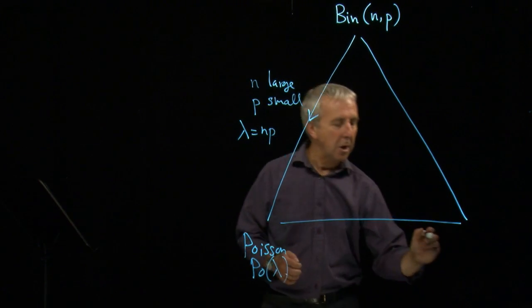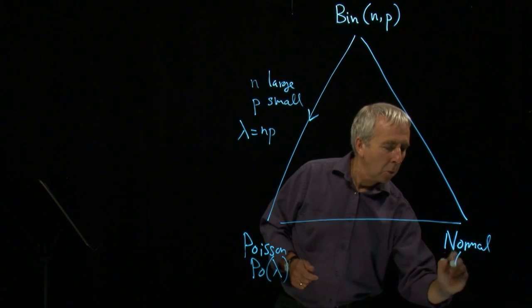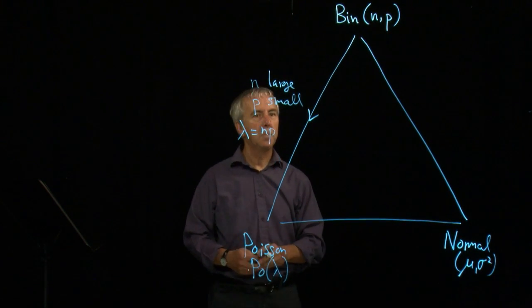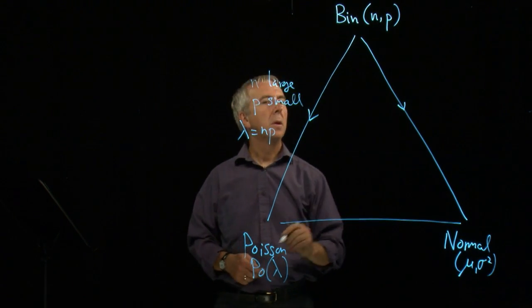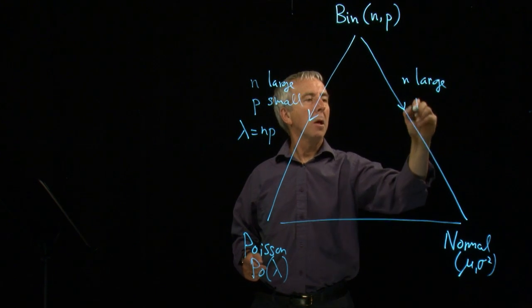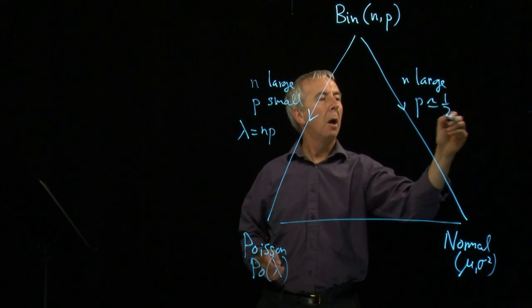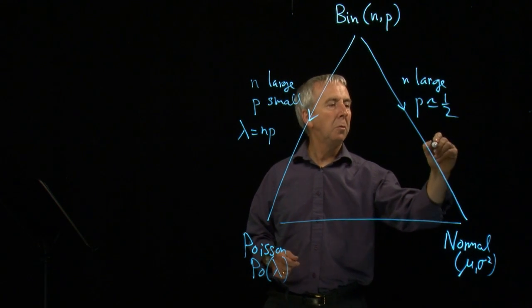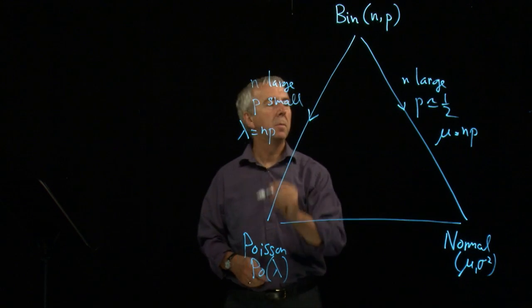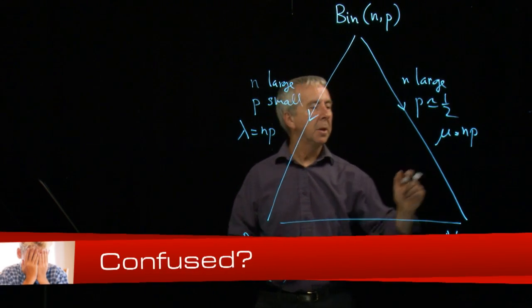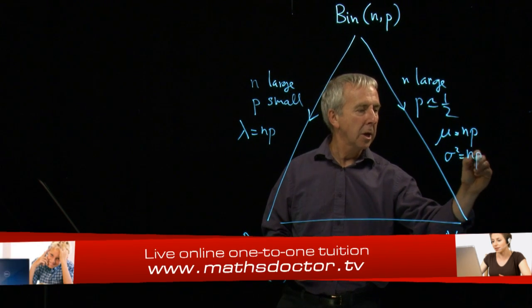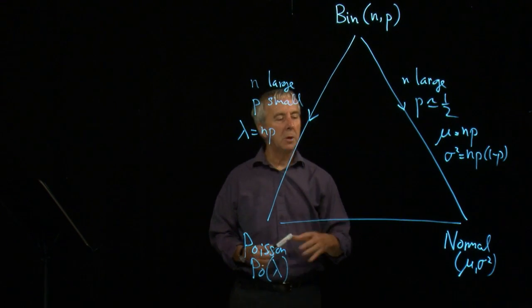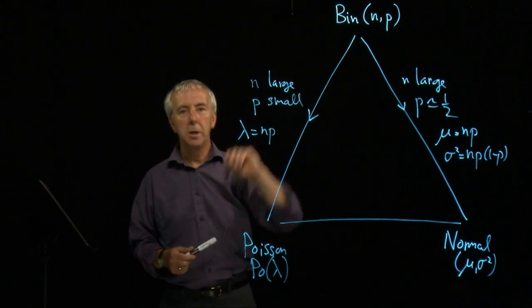Another scenario gets us to the normal distribution, which has parameters mu and sigma squared, the mean and the variance. To find these, we want n large and p roughly a half, not too extreme one way or the other. The mean of a binomial is np. And the variance, sigma squared, is np times 1 minus p. We then take the square root of that when we need the standard deviation. So that will give us the normal approximation to the binomial distribution.